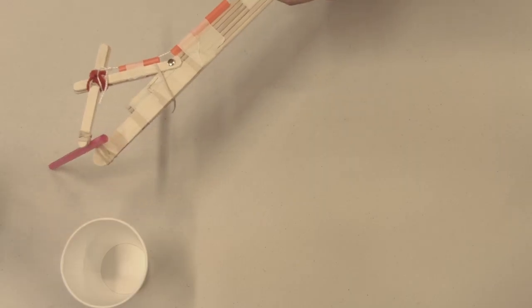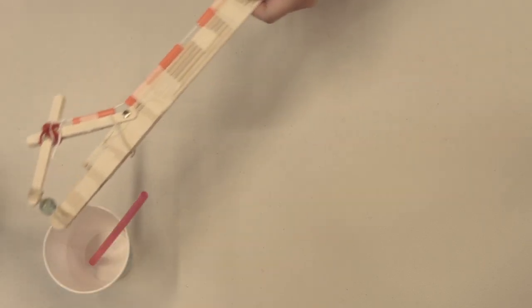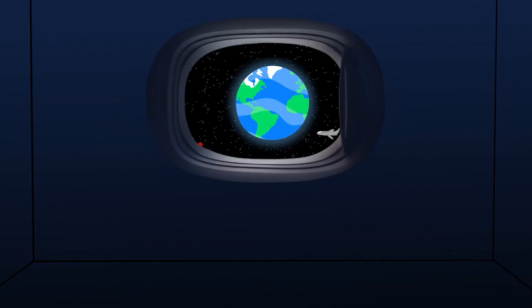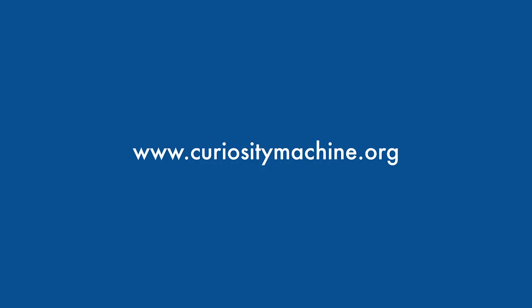So when you design and build your robotic arm, think about the weight of the objects you are trying to move and how that might impact the bending of your arm. Ready to design your own robotic arm? Start inventing on Curiosity Machine.